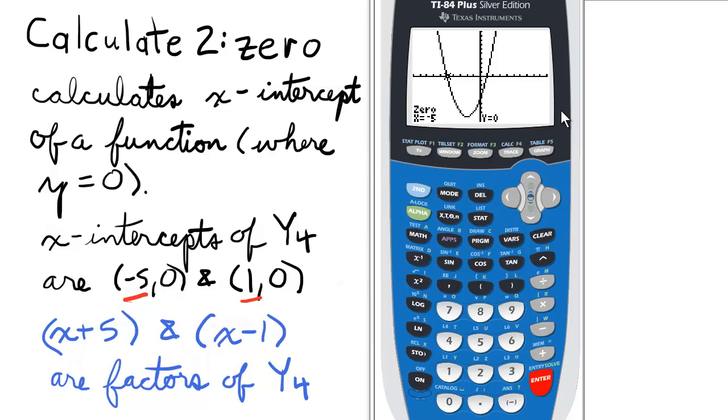We already know the leftmost x-intercept is negative 5, 0. So let's use the same process to find the rightmost root.